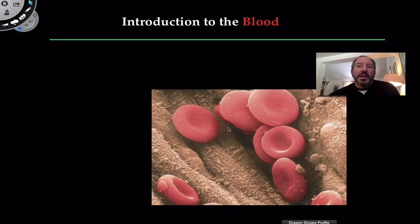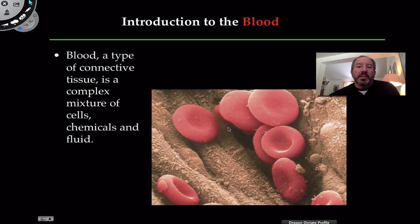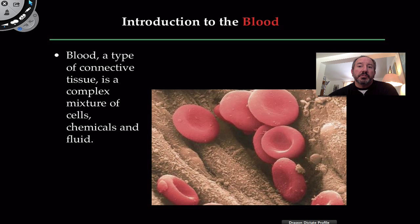Right out of the gate, what I want to say is that the blood is a type of connective tissue. There are several types of connective tissue — your bone is connective tissue, adipose tissue is connective tissue, your tendons and ligaments. A characteristic of connective tissue is that the cells are not very close together and that there's an extracellular matrix between them.